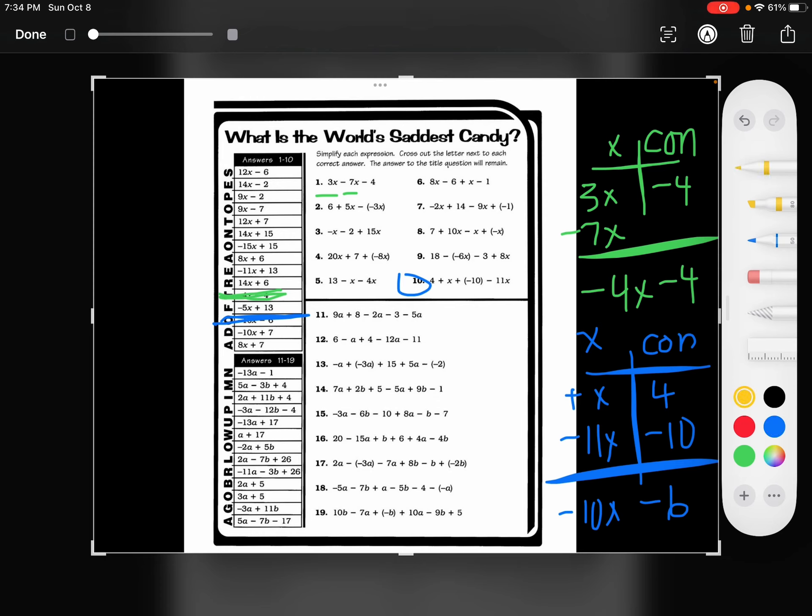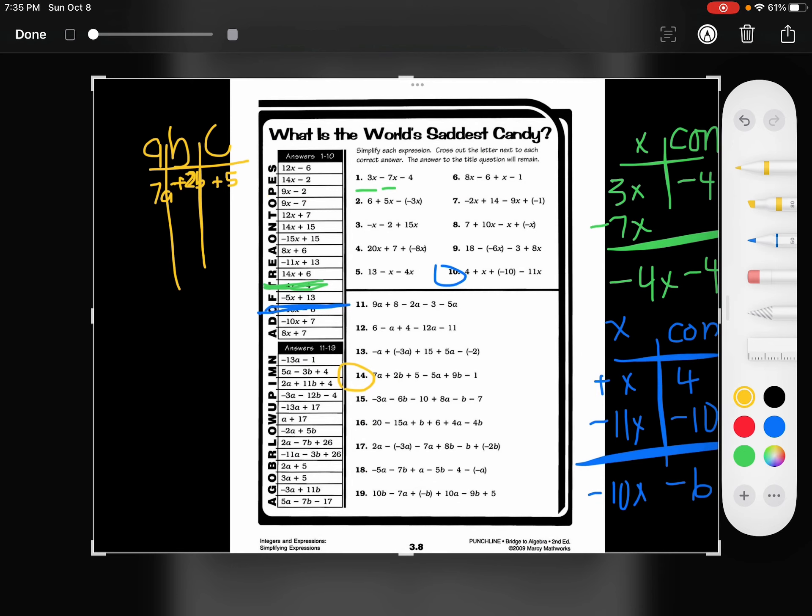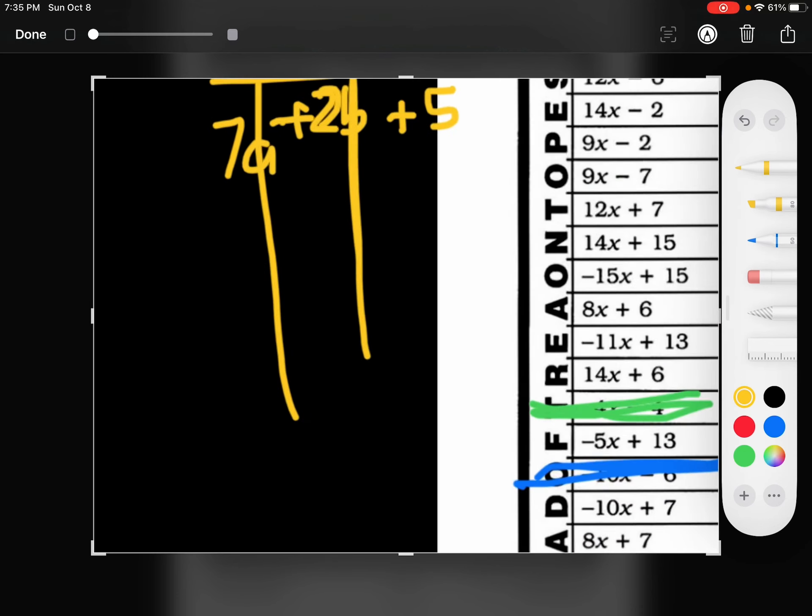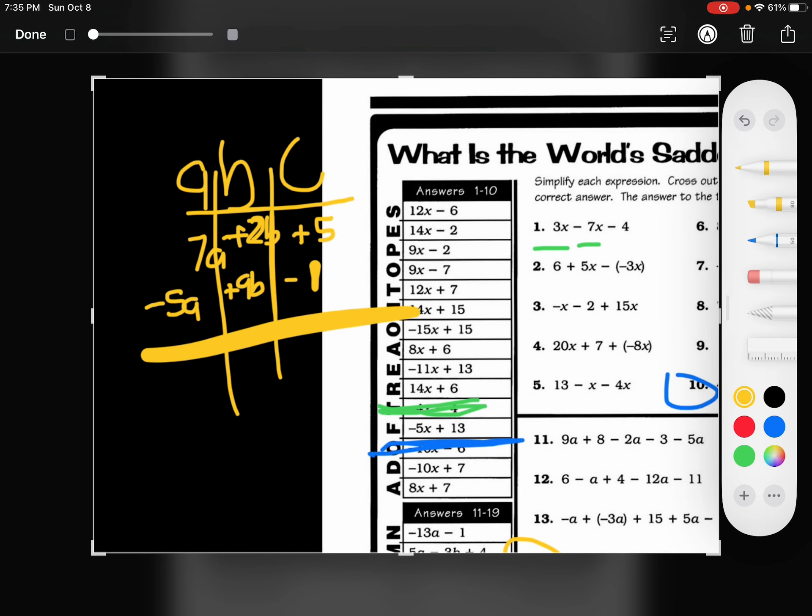Let's try one with more than two terms. I'm going to try number 14. So I have a's, b's, and constants. I have 7a plus 2b plus 5 minus 5a plus 9b minus 1.